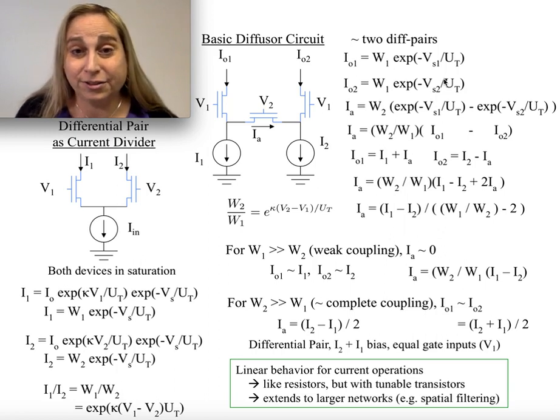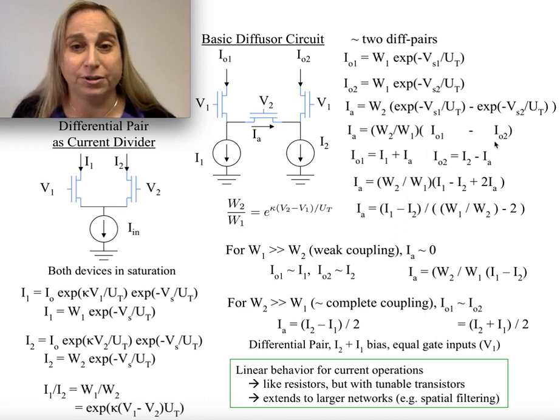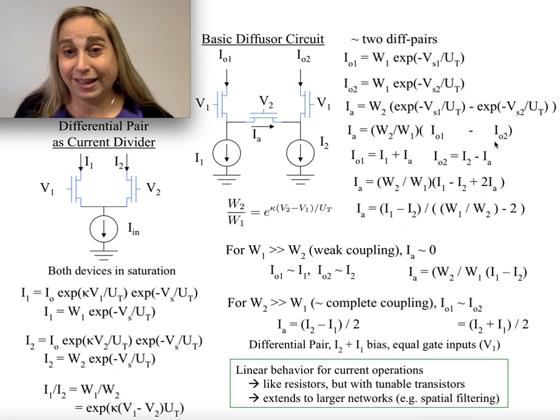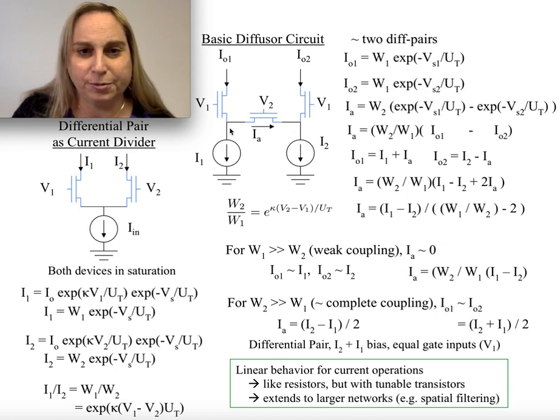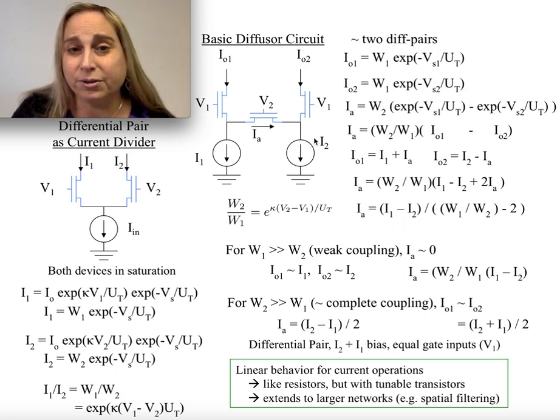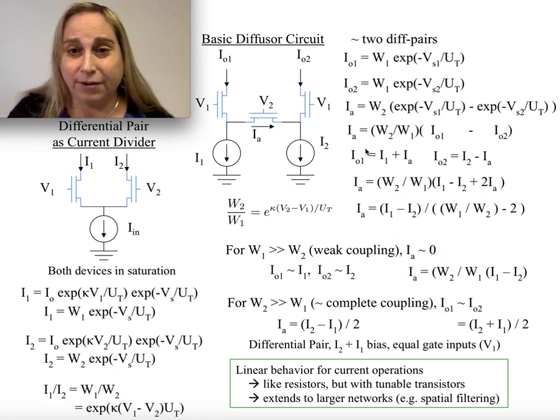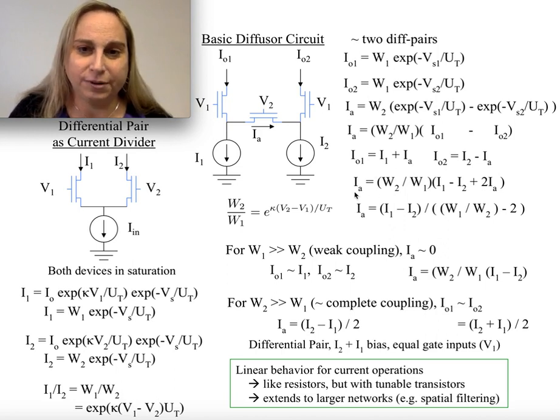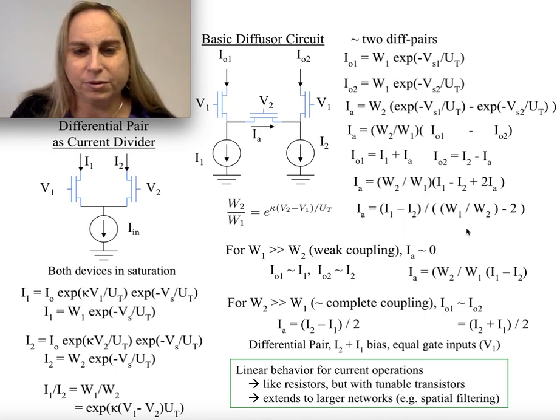So I actually could reduce this down and say that that current going, IA going in this direction is now W2 over W1 times the difference of those two output currents. And that's kind of interesting because notice this is a linear expression. I can also write linear current expressions at this node for IO1 and I1 and IA. And the same thing for IO2, I2, and IA. Okay, this, you think, wait, this is entirely linear. And then you can actually reduce down for IA for W2 over W1. Notice that, you know, we get the same sort of issues over here for W1 and W2.